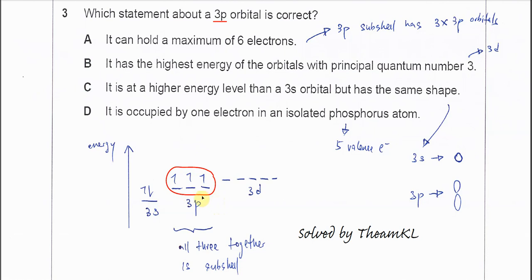Okay, is the one we call subshell. Means this is the 3p subshell. Inside the 3p subshell has 3p orbitals. Means these three orbitals, they are 3p orbitals. There's a difference between subshell and orbital. Means the orbital is inside the subshell.